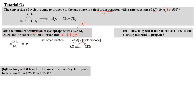Once we've done that, we substitute all the values: ln(0.25/A) equals K times T. A0 is 0.25 molar, K is 6.7 times 10 to the power of negative 4 per second, and time is 528 seconds. After canceling the units of per second and seconds, we get the concentration of cyclopropane to be 0.18 molar.